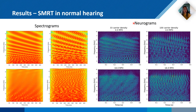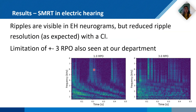We use neurograms to show the neural activation in this test. It is quite similar to the spectrograms because on the y-axis we have frequency along the basilar membrane, and due to this topological organization the neurogram resembles the spectrogram — it's like stacked post-stimulus histograms. For normal hearing, 4 RPO is visible at both carrier densities, and at 16 RPO we can even see the aliasing happening in the neurogram. For electric hearing, at 1 RPO the ripples are clearly visible, but at 3 RPO the lines are no longer easy to distinguish — whereas with normal hearing they were still visible at 4 RPO. This limitation at 3 RPO is also seen in our department in real CI users.